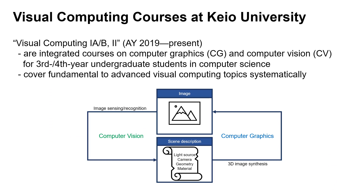First, I will introduce the background that led us to develop the educational material. Computer graphics and computer vision have become increasingly closely related to each other, and these areas are often called visual computing as a general term. In light of this trend, Keio University Department of Information and Computer Science reorganized courses into visual computing 1a, 1b, and 2 in the 2019 academic year. These are the first courses on visual computing for third and fourth year undergraduate students in computer science.